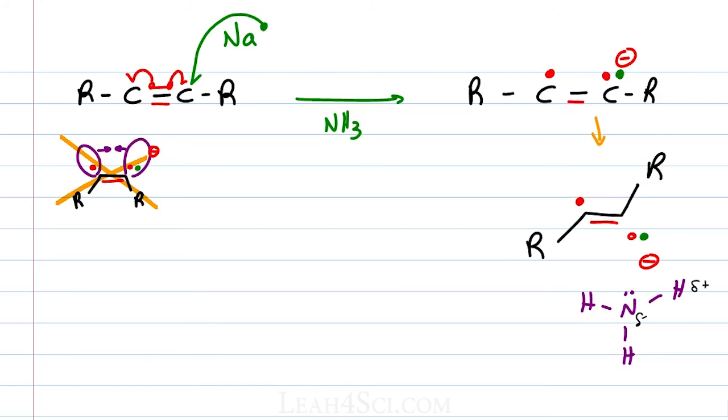That partially positive hydrogen will attract the lone electron pair, the one that's made from the green and red electrons. These electrons will reach out for one of the hydrogen atoms breaking the bond between hydrogen and nitrogen to collapse those electrons back onto the nitrogen atom.